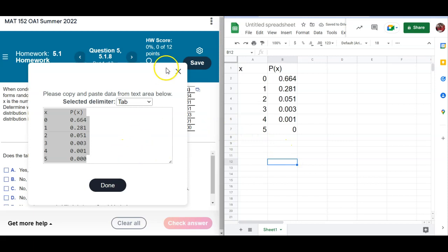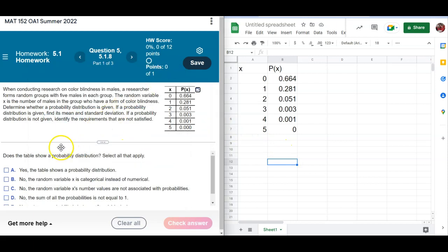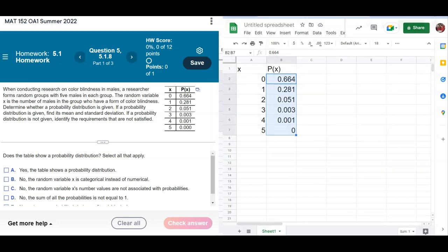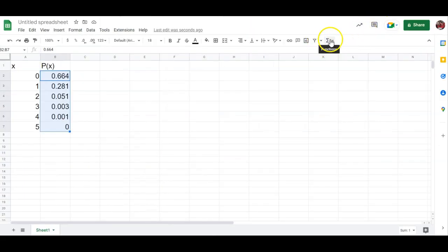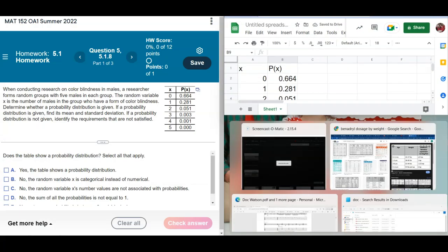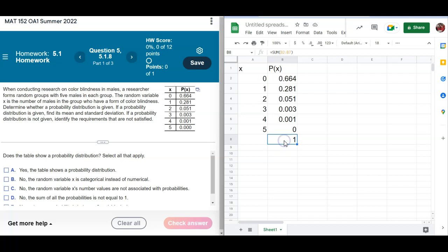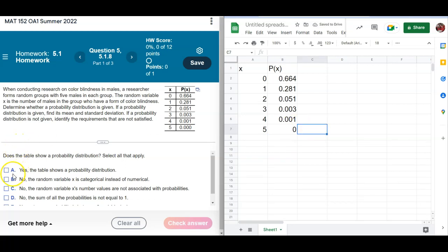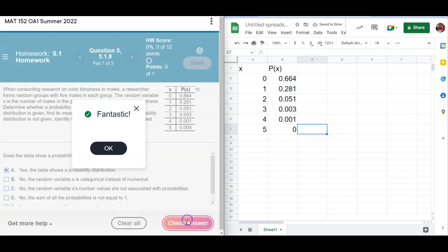The first thing it wants to know is, is this a probability distribution? Remember, we can't have any negatives in here. Everything has to be between 0 and 1. So far that looks good. And then the other thing is that it has to sum to 1. So I'm going to go in here and click the little sum button right there. See, it sums to 1. So everything looks good. This is a probability distribution.